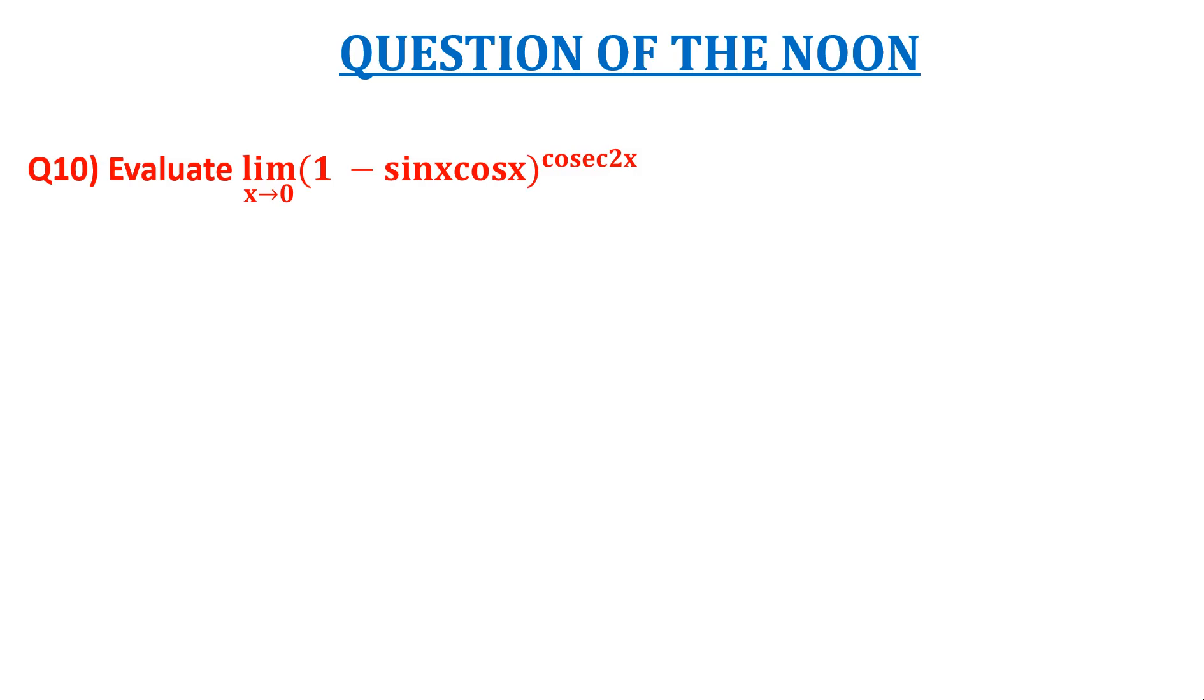The question is: evaluate limit x tends to 0 of (1 - sin x cos x)^(cosec 2x). The options are: (a) e^(-1), (b) e^(-2), (c) e^(-1/2),